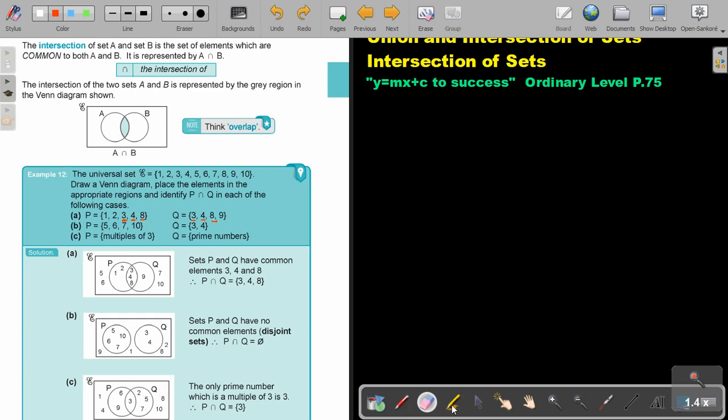Let's look at number B. So set B is this and Q. Now if you look, 5, 6, 7, 10, 3 and 4, there's no common elements. So it's disjoint sets. So I don't let them overlap. I just draw them separately. So then it's actually very easy.